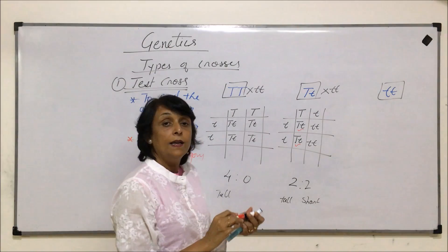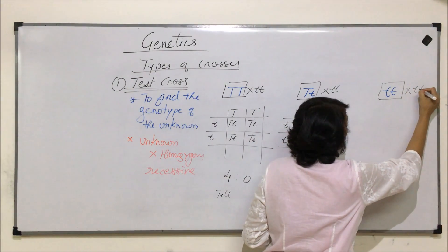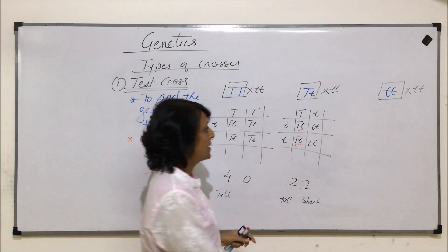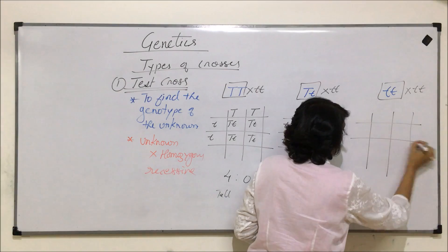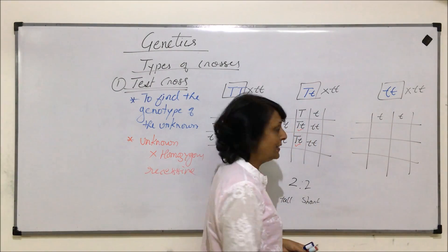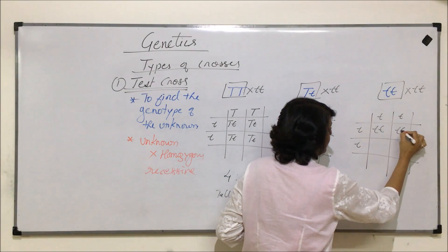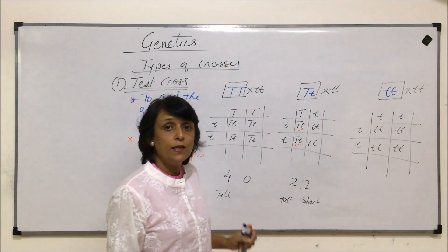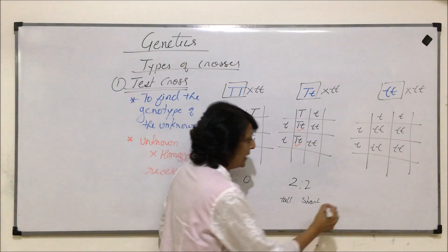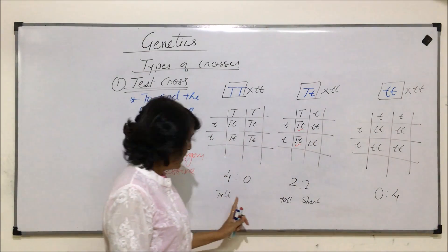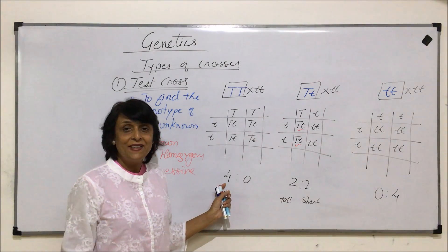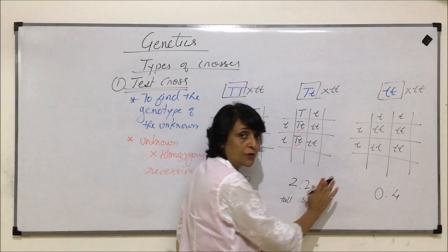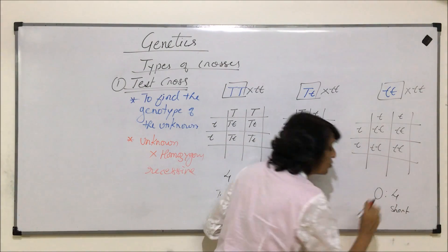For the third situation, we cross the homozygous recessive unknown with the homozygous recessive parent. This parent produces gametes with recessive alleles, and the unknown also produces recessive alleles, so all four offspring get only recessive traits — all four are going to be short or dwarf. The ratio is zero is to four. When writing the ratio, the first number is for dominant, middle for heterozygous, and the last for recessive.